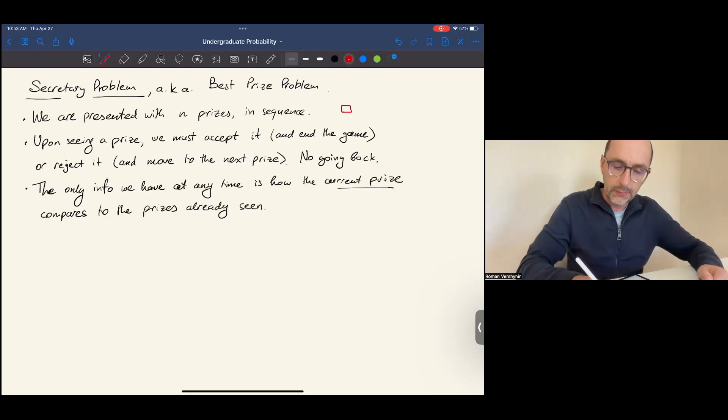For instance, we are offered the first prize and we decide to reject it. Then we are offered the second prize, and now we know whether this prize is better or worse than the first one. Suppose we reject the second prize as well. Then we are offered the third prize. Maybe the third one is better than the first two. Maybe then we accept it, and we come home with the third prize.